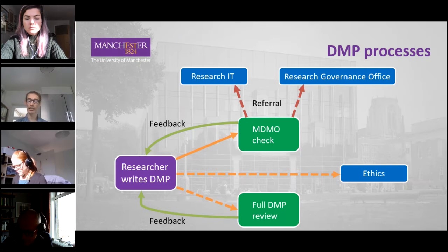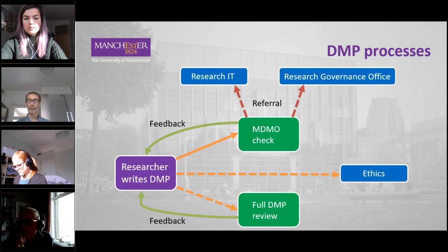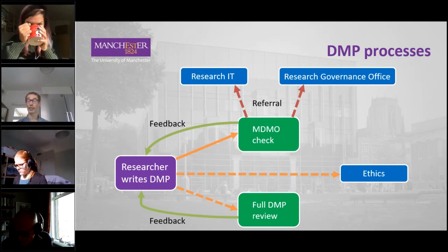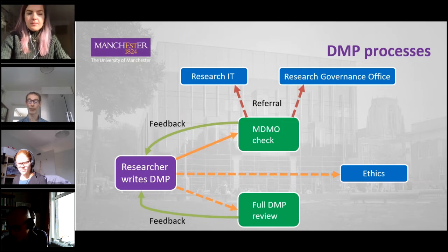Since we started using DMP Online in April 2018, our researchers have created over 8,300 plans — that's about 3,000 plus plans per annum — and over the last 12 months we've completed over 430 full DMP reviews. If a research project requires university ethics approval, researchers are prompted whilst filling in their ethics form to attach their DMP and any feedback they've received from the library or other support services.